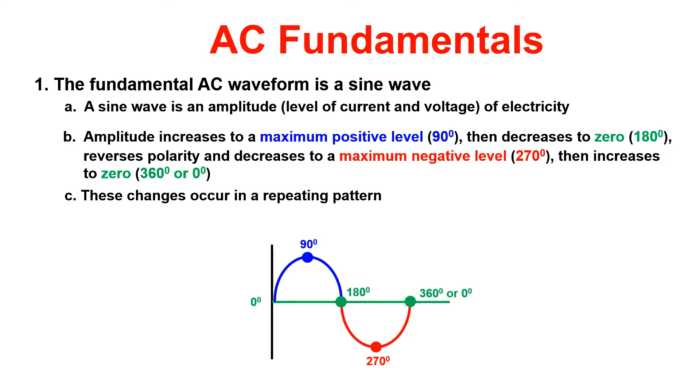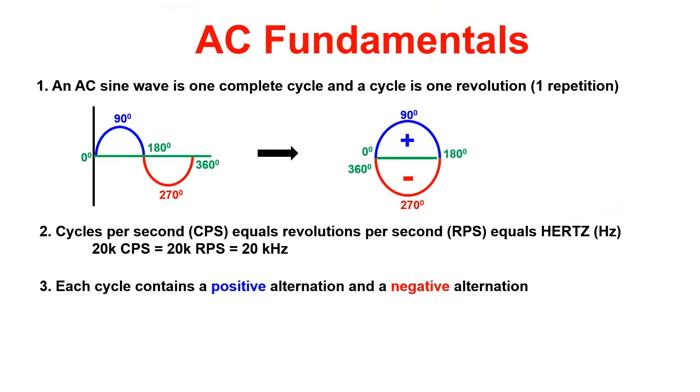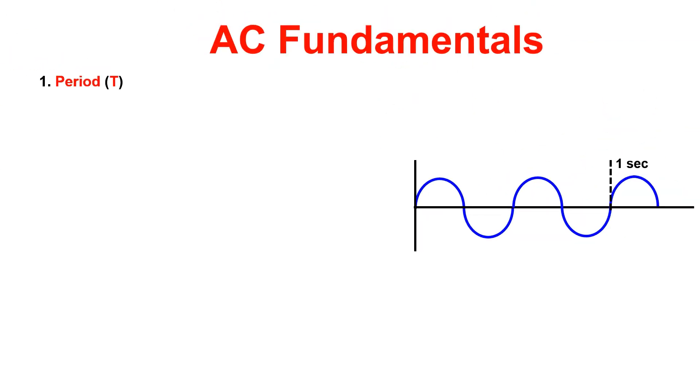What is frequency you're thinking? Well let me show you. An AC sine wave is one complete cycle and a cycle is one revolution. Cycles per second equals revolutions per second which equals hertz. Each cycle contains one positive alternation and one negative alternation. Frequency is measured in hertz. Now there are three values we should be concerned with: Period, frequency, and wavelength.